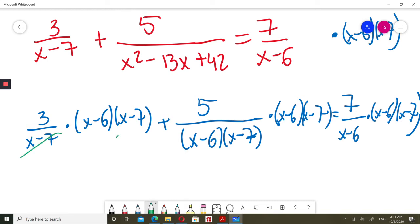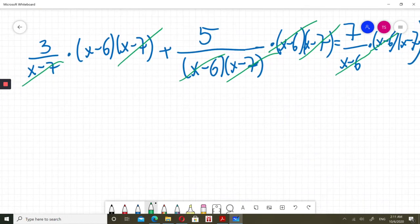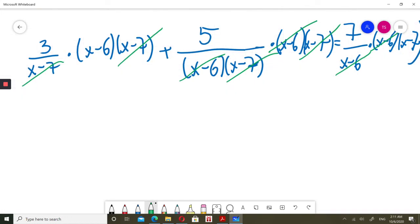Here x minus 7, this is going because x minus 7 divided by x minus 7 is just 1. The same, 1 will be here and 1 will be here, and 1 will be here. After that, what will I have? After that I will have 3 times just x minus 6 plus in this second term is just 5, and this will equal 7 times x minus 7.